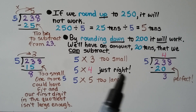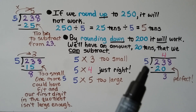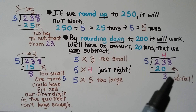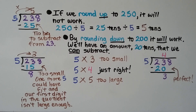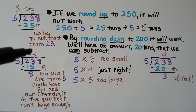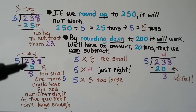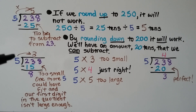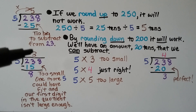By doing 5 times 4, it's just right, because then we get a 20. When we subtract, we get a 3, and 5 will not fit into the 3 until we bring down this 8 and say 5 can fit into 38. So if you're doing long division and you put a partial quotient up here, and when you multiply and subtract you get a number larger than the divisor, that means the number up here is too small — the 5 could have gone into it one more time.